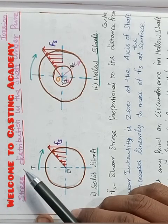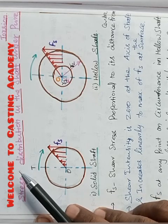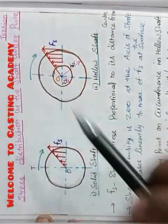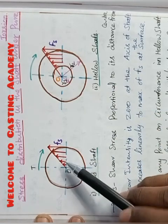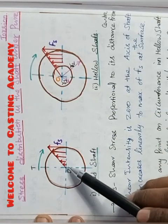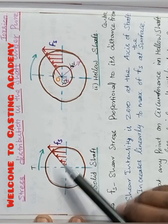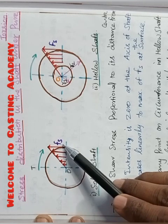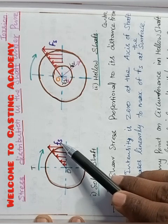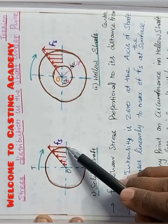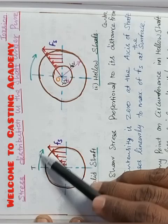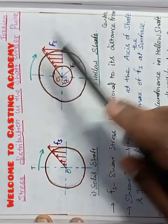Stress distribution in the shaft under pure torsion. Now you see the solid shaft and hollow shaft. So here the stress is zero at center and at surface is maximum. Shear stress Fs is zero at center and at the surfaces it will be maximum under pure torsion.